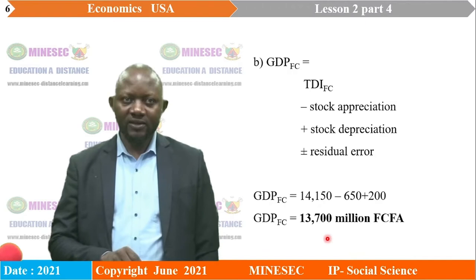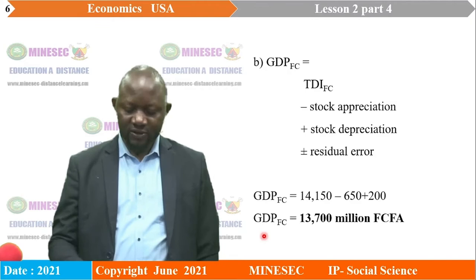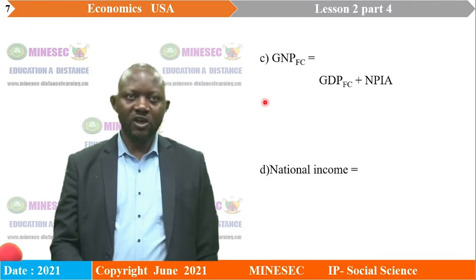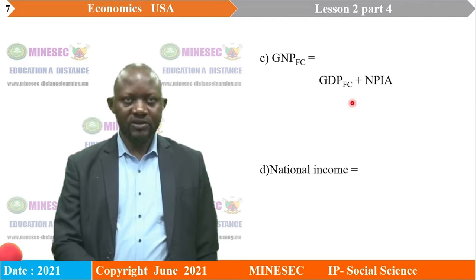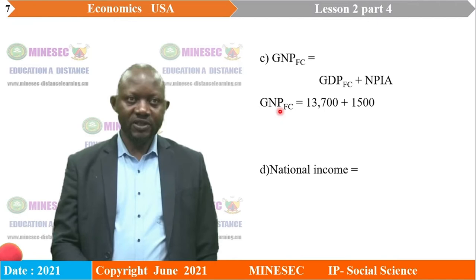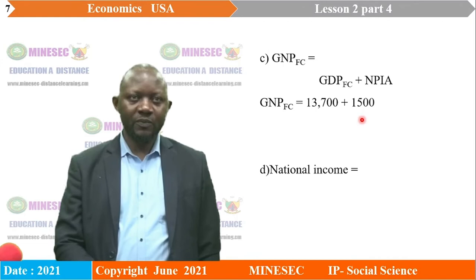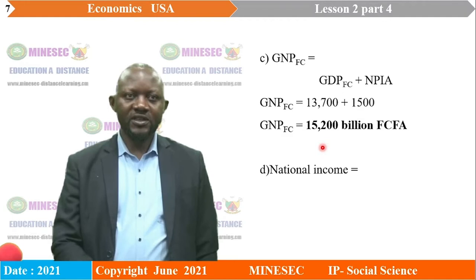Now let's look at gross national product at factor cost, using the formula: gross domestic product at factor cost plus net property income from abroad. Net property income from abroad was given. So we take 13,700 plus 1,500 representing net property income from abroad. Our final answer is 15,200 billion francs CFA.